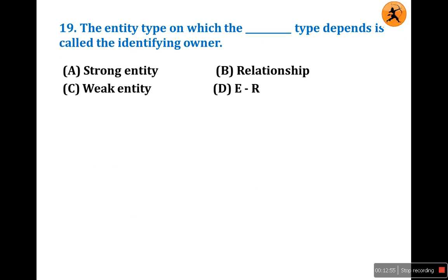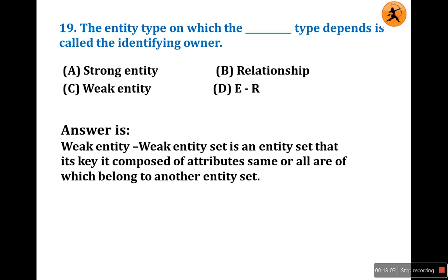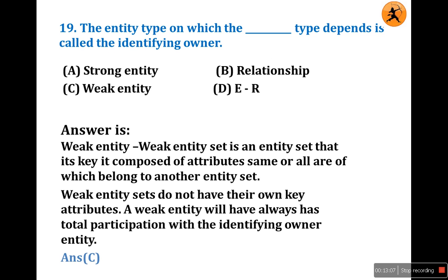Question number 19: The entity type on which a weak entity type depends is called the identifying owner. Options are: A - strong entity, B - relationship, C - weak entity, D - diagram. A strong entity does not depend on any other entity. A weak entity cannot be identified directly and depends upon another entity. Answer is C — the identifying owner is associated with a weak entity.